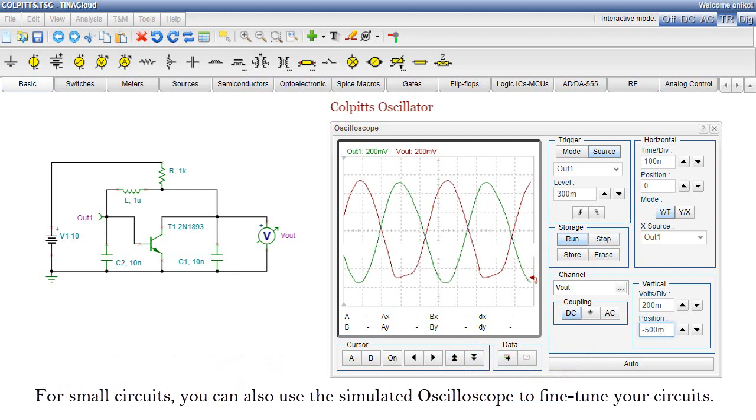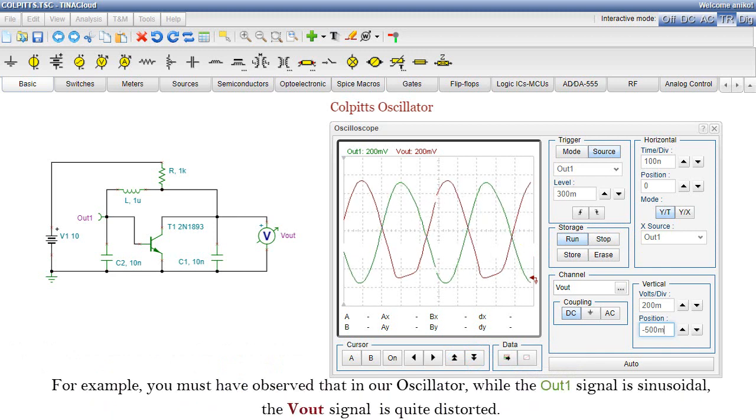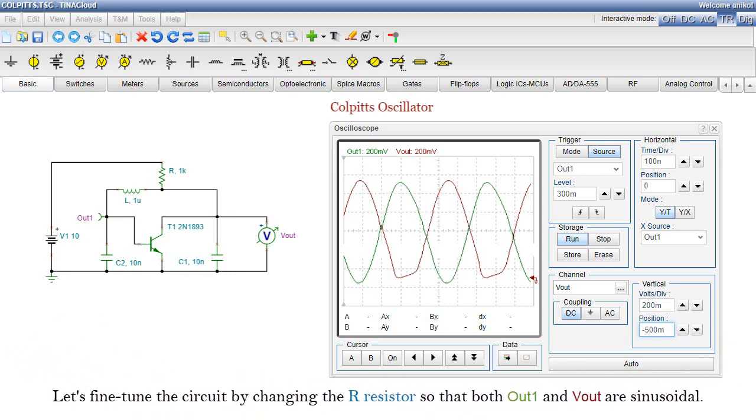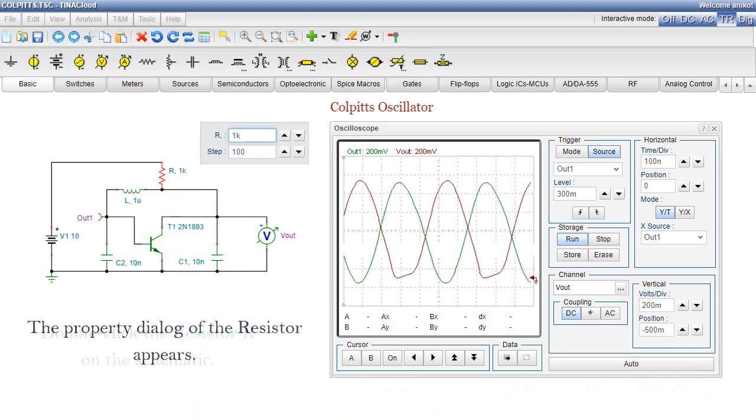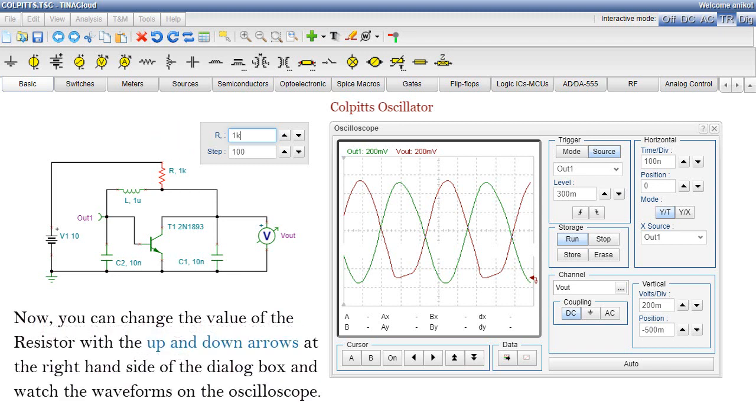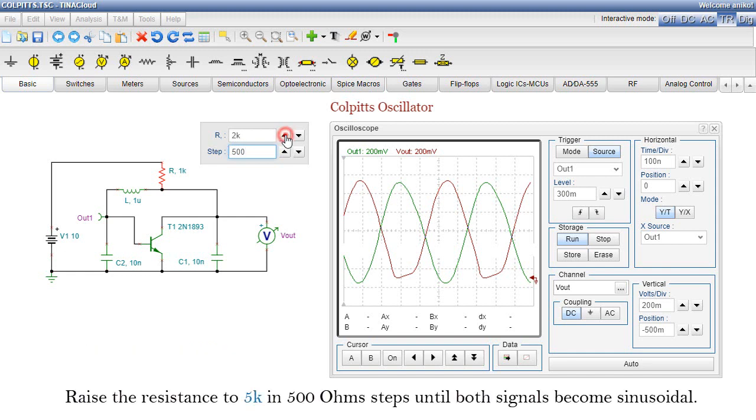For small circuits, you can also use the simulated oscilloscope to fine-tune your circuits. For example, you must have observed that in our oscillator, while the Out1 signal is sinusoidal, the Vout signal is quite distorted. Let's fine-tune the circuit by changing the R resistor so that both Out1 and Vout are sinusoidal. Double-click the resistor R on the schematic. The property dialog of the resistor appears. Now, you can change the value of the resistor with the up and down arrows at the right-hand side of the dialog box, and watch the waveforms on the oscilloscope. You can also set the step size and change it to 500 ohms. Raise the resistance to 5k in 500 ohms steps until both signals become sinusoidal.